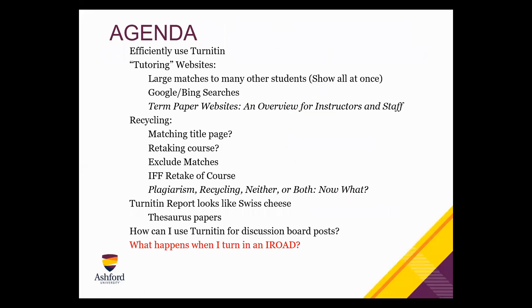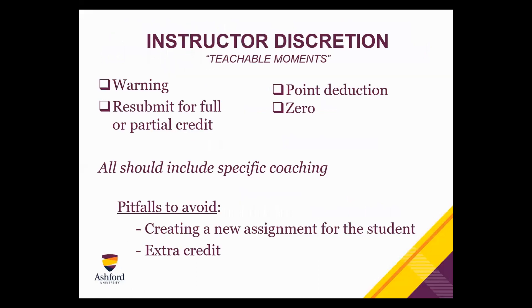Finally, what happens when I submit an iROAD? An iROAD is an Incident Report of Academic Dishonesty. Before we get to that point, there's a lot of discretion that instructors have. If you see a possible plagiarism or academic dishonesty concern, there are many things you can do within the classroom itself: give them a warning and email them directly, ask them to fix and resubmit the paper for full or partial credit, do a point deduction, or give them a zero for that assignment. For all of those steps, make sure you're very specific with your feedback — don't just write 'this paper's plagiarized.' Help them understand what they did so they can fix it moving forward. That's part of the coaching feedback you should provide every student.